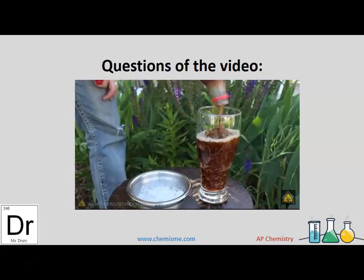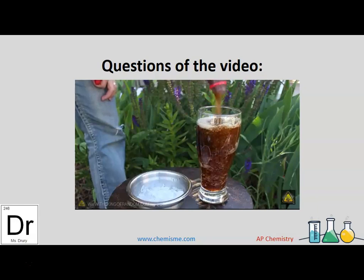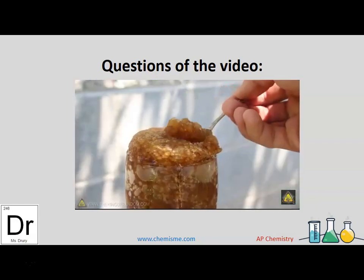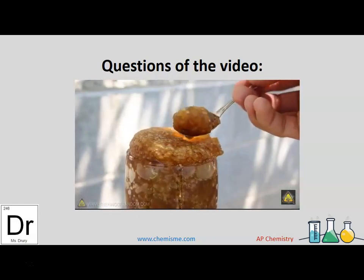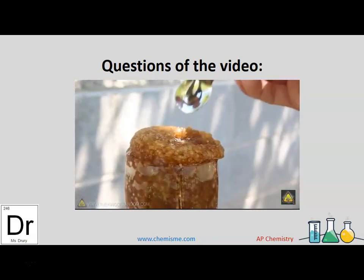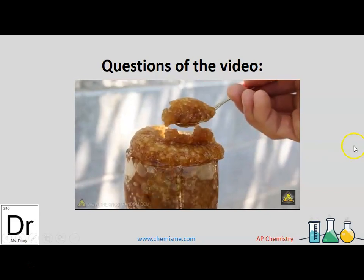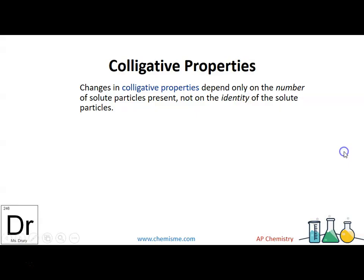Pour it in a glass and you'll get a good idea of how thick the slush really is. When it starts pushing up at the top, you can see it's a light and fluffy, delicious carbonated ice. We're going to describe that using colligative properties. Colligative properties depend only on the number of solute particles present, and not on the identity of the solute particles.